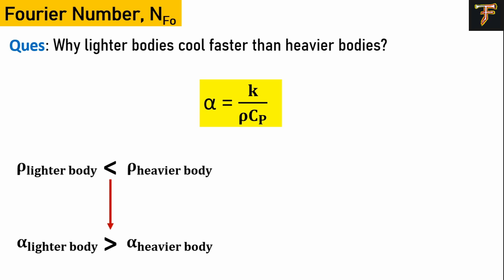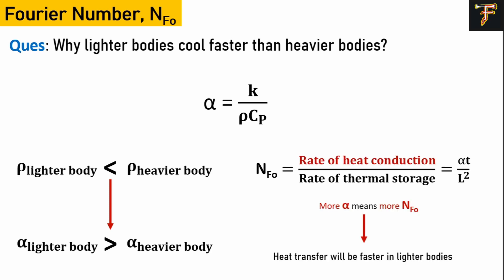You'll have more thermal diffusivity in lighter bodies compared to heavier bodies. Put this value in the Fourier number where we have αt/L². α is more in lighter bodies and less in heavier bodies. More α means more NFo, which means the rate of heat conduction is really good in that material. So lighter bodies cool faster compared to heavier bodies.